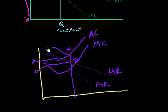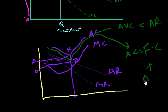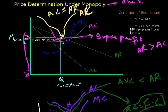In this loss situation, the seller is getting average variable cost which is equal to average revenue. Basically, average cost equals fixed cost plus average variable cost. So the seller will get a loss equal to the fixed cost if average cost is more than the average revenue curve.